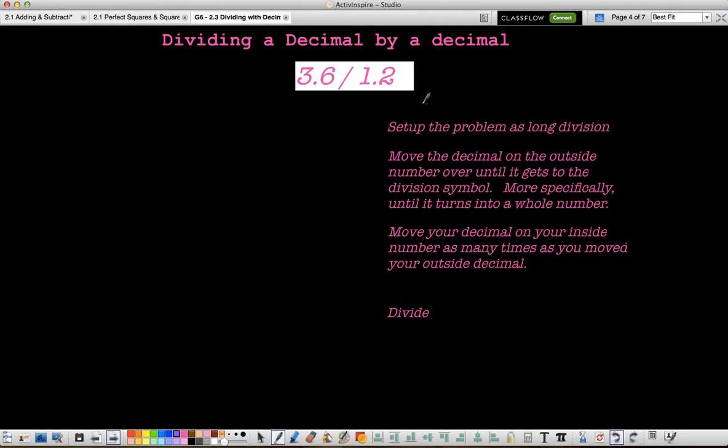Dividing by a whole number is nice, but we don't always get whole numbers. So now we're dividing by another decimal. The steps are still the same. We're still going to set it up as long division, so the divisor on the outside, the dividend on the inside. But then that next step is going to be to move the decimal on the outside number. Instead of saying outside number, we're going to say on the divisor. So we're going to move the decimal on the divisor over until it gets to the division symbol. More specifically, until it turns into a whole number. So what this means is I have 1.2. I'm going to move the decimal to the right on my divisor, one space, so it becomes a 12.